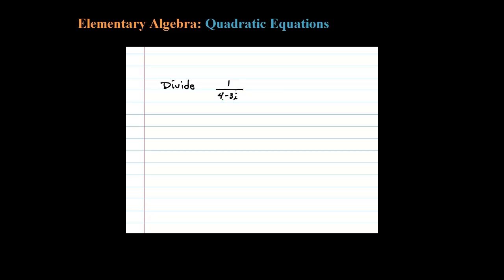Here I'm asked to divide 1 by the complex number 4 minus 3i. Now the technique here is to multiply numerator and denominator by the conjugate. In this case, the conjugate is 4 plus 3i.